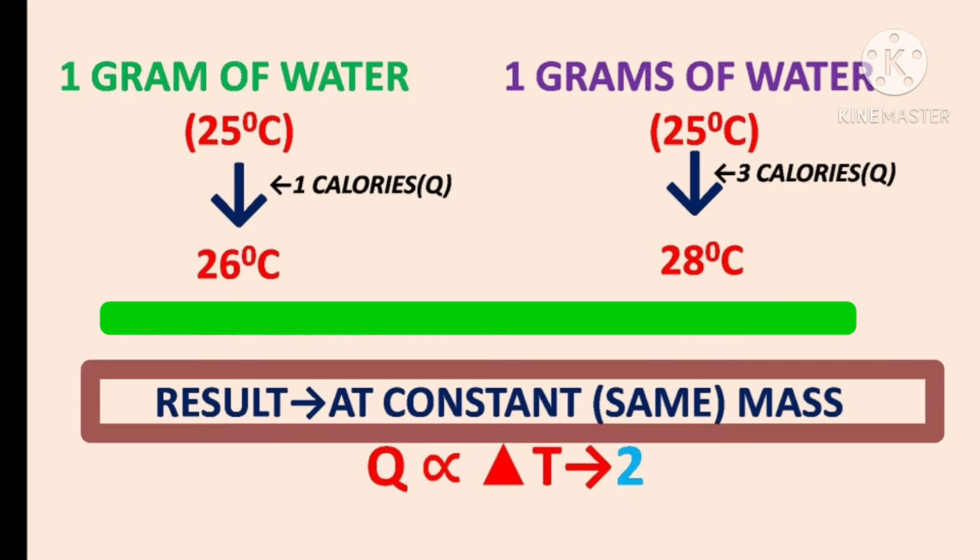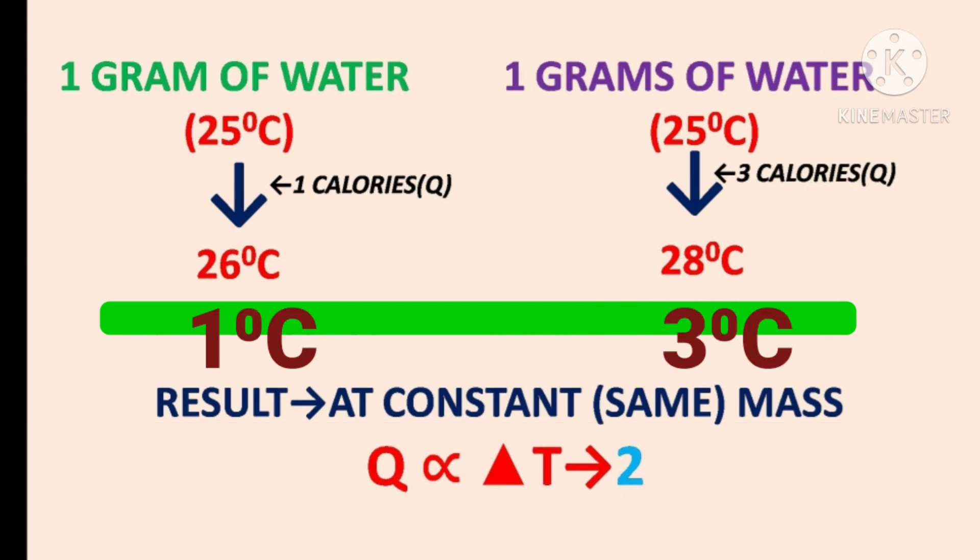Here, both masses are same, 1 gram of water, but the change in temperature, Delta T, is not same. Delta T is final temperature minus initial temperature. Finally, at same mass, high difference in temperature requires highest heat supply, whereas less difference in temperature requires lowest heat supply. Therefore, heat is directly proportional to Delta T.